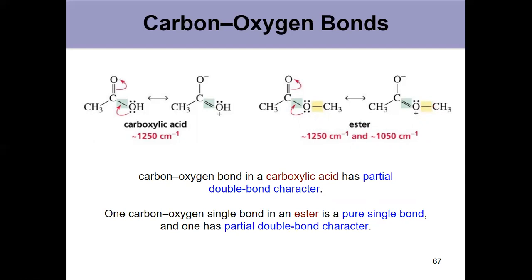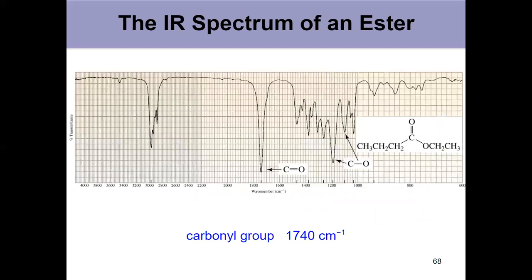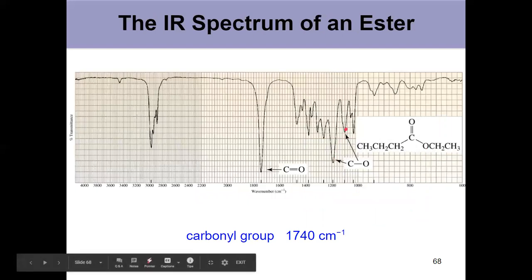For an ester, you see two peaks—one for each C-O bond. You typically have one at 1250 (the one participating in resonance) and another at 1050 (which doesn't have resonance contributors, so it's more of a pure single bond). Those two peaks for an ester make them pretty easy to identify via IR. If we look back, we see peaks at 1250 and 1050, plus our slightly higher carbonyl peak. You're 99% confident you're dealing with an ester.